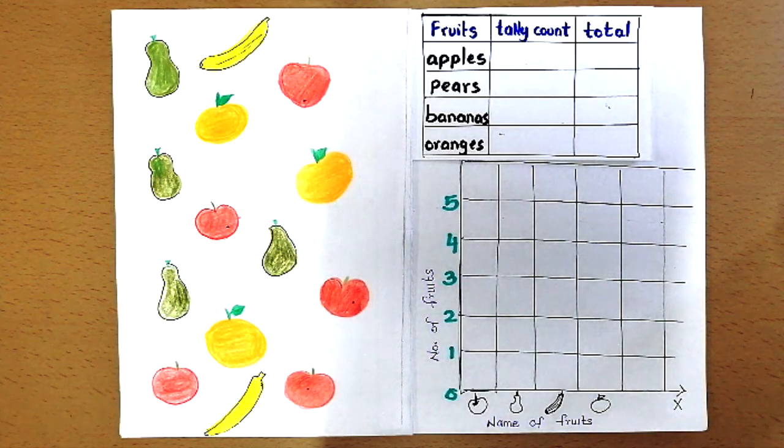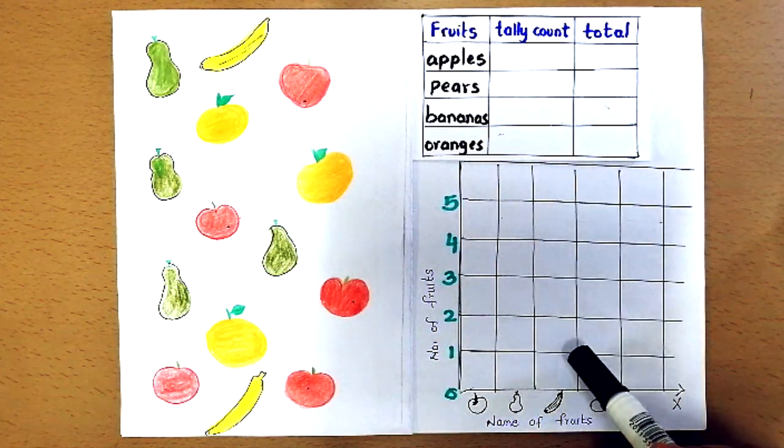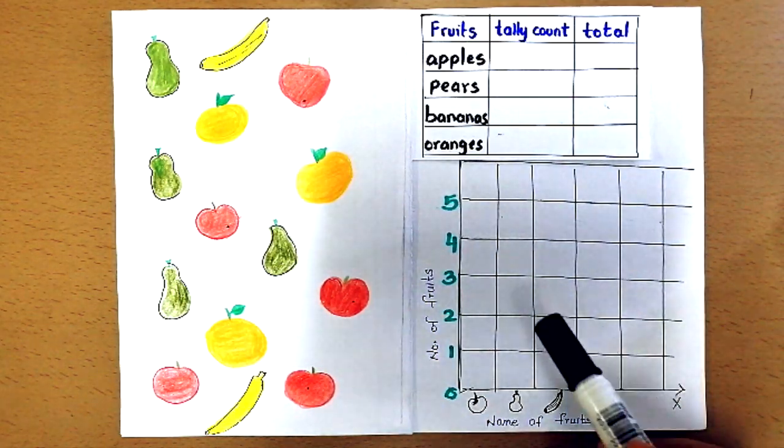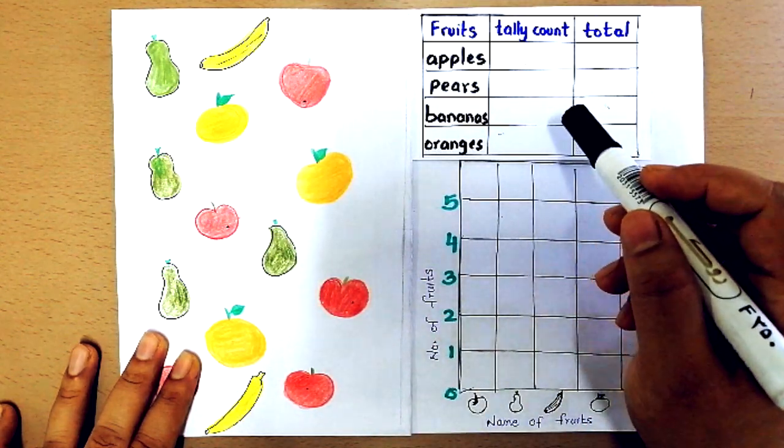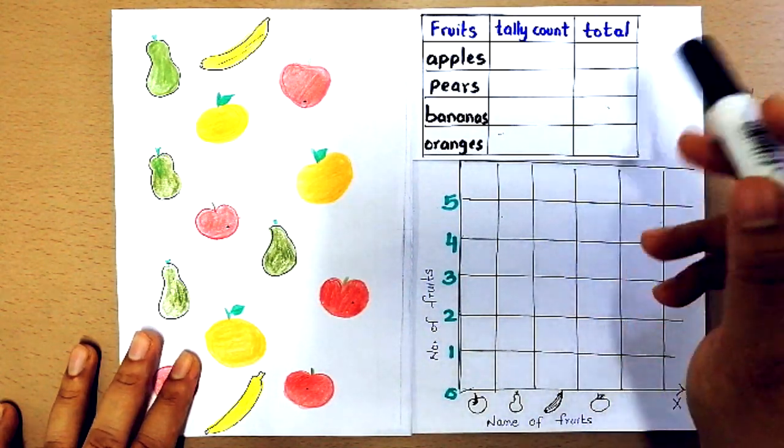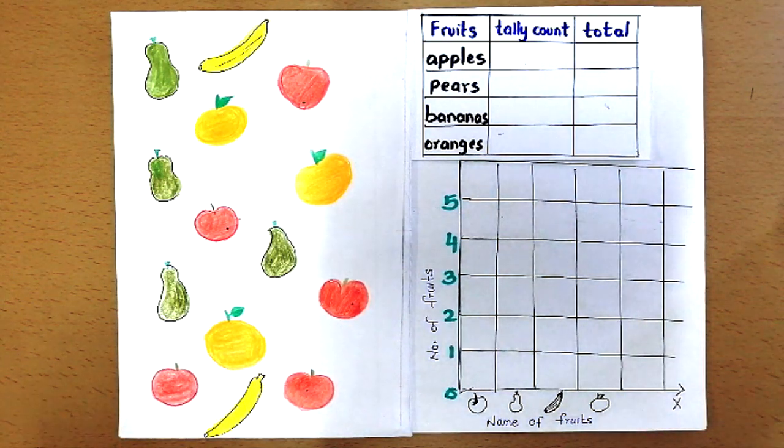I would also like to show you how you can make a tally chart before starting the block graph. Each time you count a fruit you have to draw a small line and the fifth line should cross all the four tiny lines. So let's make a tally chart for these fruits.